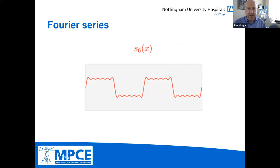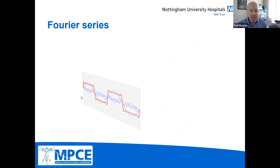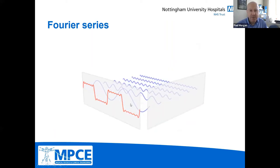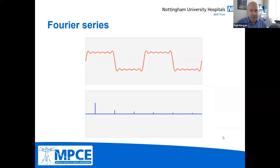Here's an animation from a Wikipedia page. Our approximation of the square wave in red is made up of a Fourier series — a sum of cosine and sine terms. The individual frequencies show a low frequency with a high amplitude represented by a tall bar, and then higher frequencies at lower amplitudes. That's an example of our Fourier series.